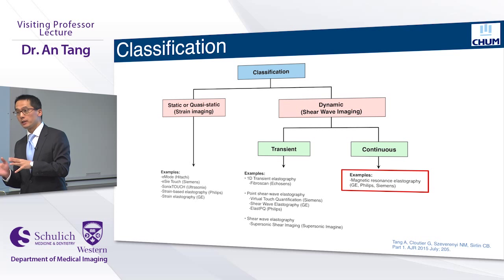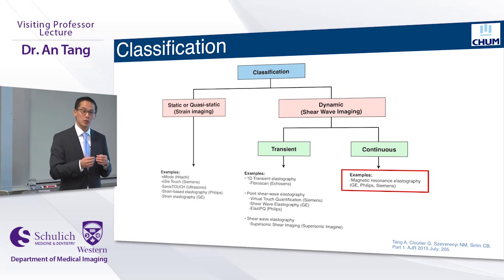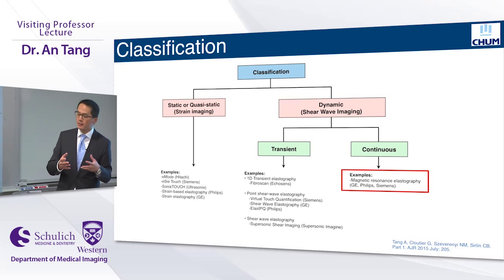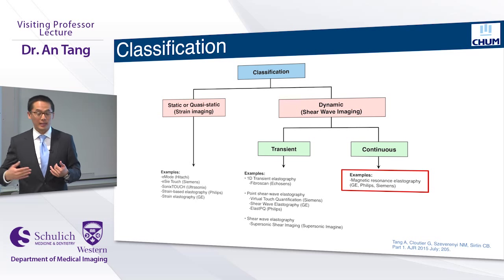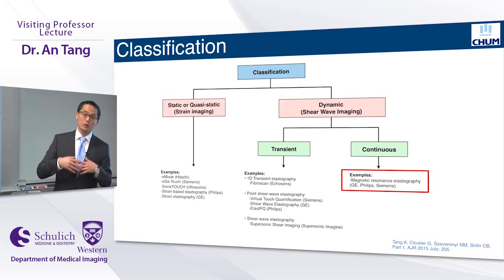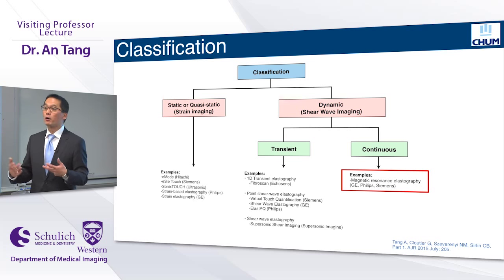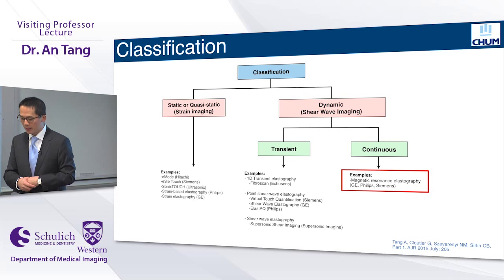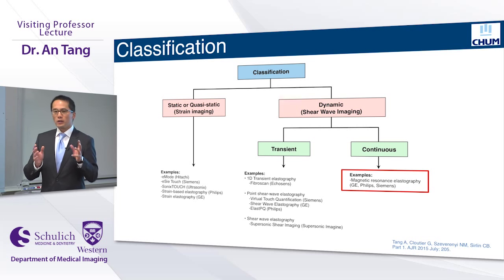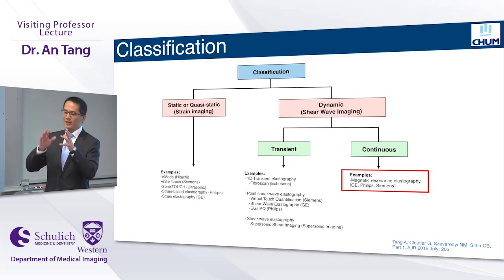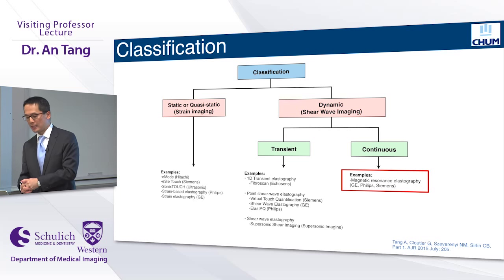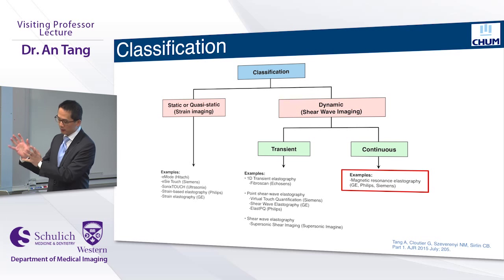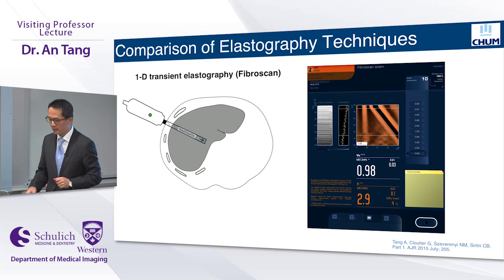Dynamic techniques can be further subdivided into transient, if the excitation is very short in the range of milliseconds, or continuous, if mechanical vibrations are applied throughout the MR sequence. The commercially available ultrasound techniques fall into the dynamic transient elastography methods, whereas currently commercially available MR techniques fall into the dynamic continuous elastography techniques.